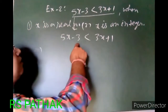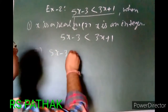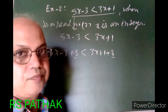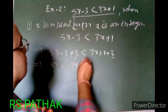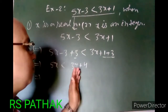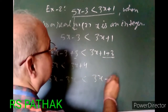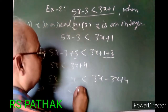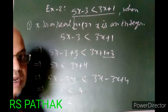First of all, we remove minus 3 by adding 3 to both sides: 5x − 3 + 3 < 3x + 1 + 3, giving 5x < 3x + 4. Then subtract 3x from both sides: 5x − 3x < 4, which gives 2x < 4, therefore x < 2.